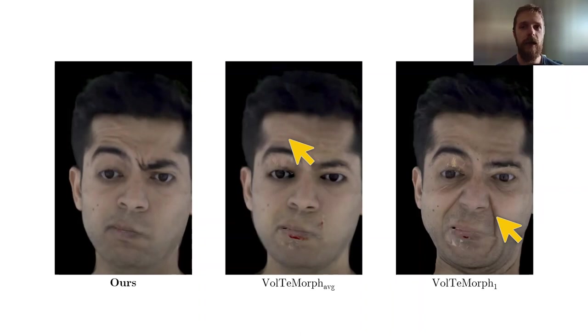Both baselines exhibit issues with the correct density. Our approach correctly predicts wrinkles on one side of the forehead and flat skin on the other. Notice also a small wrinkle due to the frowning of one of the eyebrows.